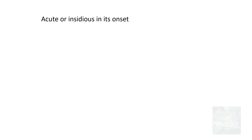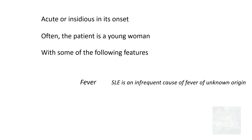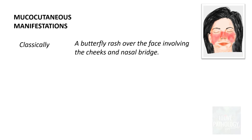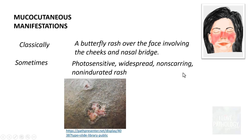Systemic lupus erythematosus is usually acute or insidious in onset. The patient is often a young woman with some of the following features — not all features need be present. Constitutional symptoms, particularly fever, are among the most important features, and SLE is an infrequent cause of fever of unknown origin. The classic mucocutaneous manifestation is a butterfly-shaped rash over the face involving the cheeks and nasal bridge. The rash can be photosensitive, widespread, non-scarring, and non-indurated.